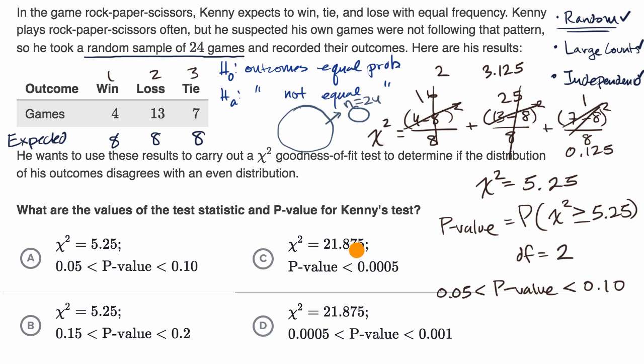And so, for example, if ahead of time, and he should have done this ahead of time, he set a significance level of 5%, and our p-value here is greater than 5%, which we just saw, he would fail to reject, in this situation, the null hypothesis. But they're not asking us that here. All they're asking us is what is our chi-squared value and what range is our p-value in? Well, let's see, 5.25 are both of these values. And we saw we got a p-value between 5% and 10%. So it is choice A right over there.